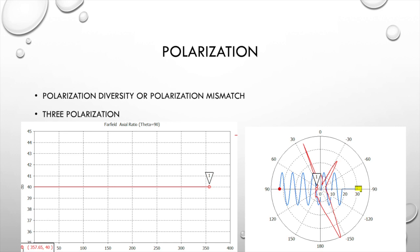When the EM waves have a different polarization from the receiving antenna, some of the EM waves will be missed. For example, if we use a circular polarized antenna to receive linearly polarized waves, only 50% of the energy can be successfully received. A vertically polarized antenna cannot receive horizontally polarized waves. On the other hand, we can employ polarization diversity or polarization mismatch to increase the signal-to-noise ratio.